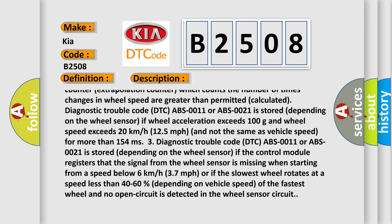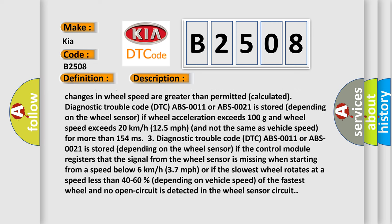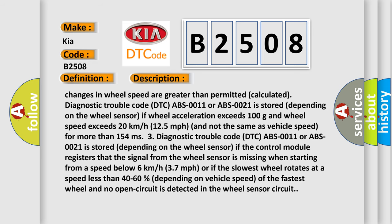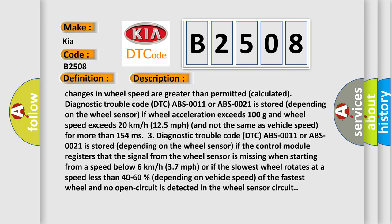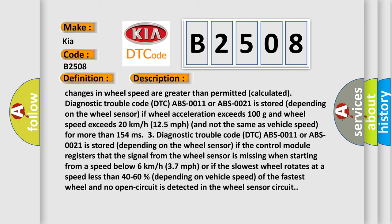If the control module registers that the signal from the wheel sensor is missing when starting from a speed below 6 kilometers per hour (3.7 miles per hour), or if the slowest wheel rotates at a speed less than 40 to 60 percent depending on vehicle speed of the fastest wheel and no open circuit is detected in the wheel sensor circuit.